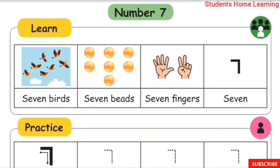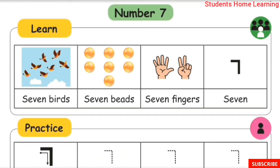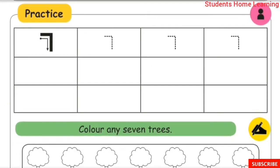Number 7 — Learn: seven words, seven beads, seven fingers. Seven objects. Seven-lettered words. Practice writing seven.